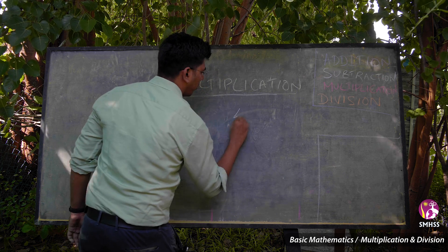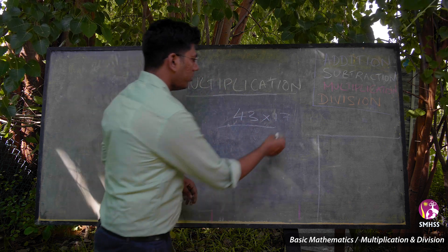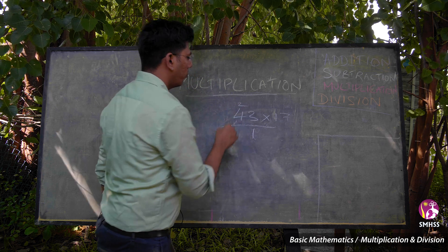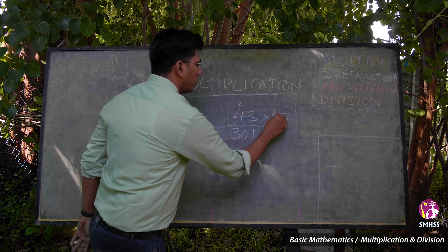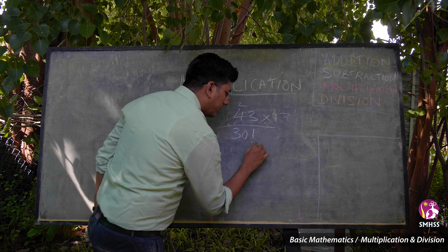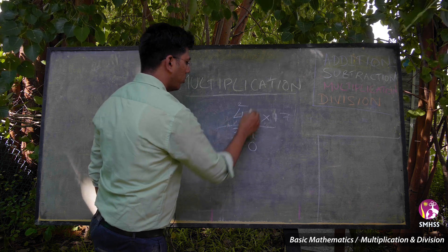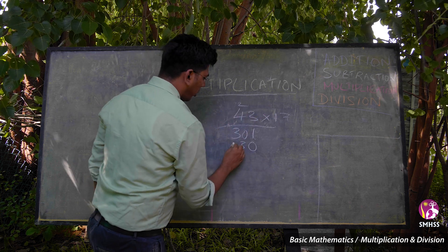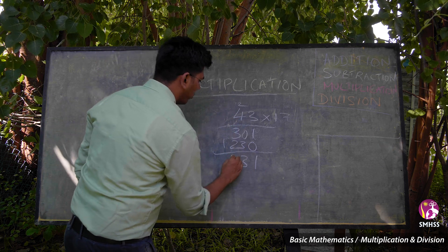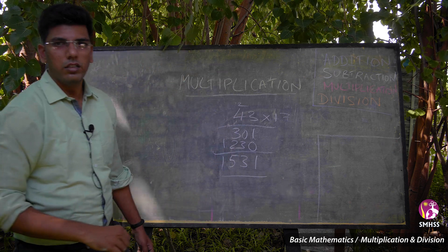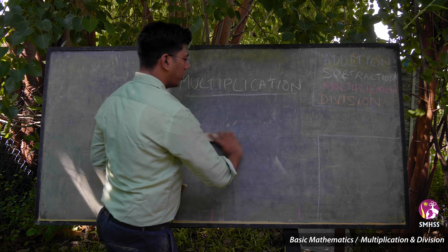Let us take 43 into 17. 7 threes are 21, write 1 carry 2. 7 fours are 28 plus 2 equals 30. Now for the 10s digit 1, write a 0 placeholder. 1 three is 3, 1 four is 4. Adding: 301 plus 430 gives 1531. This is how multiplication works.